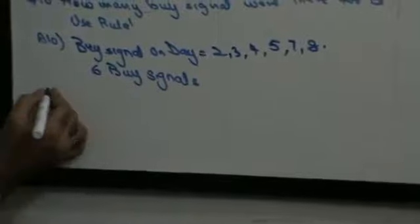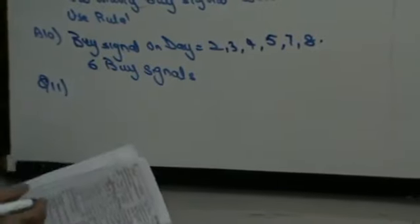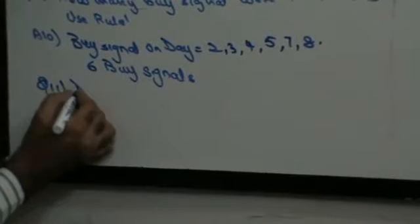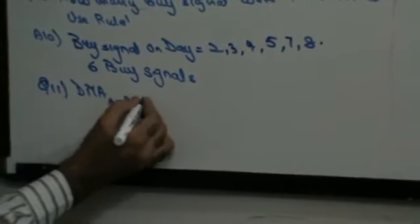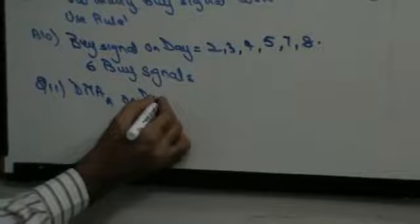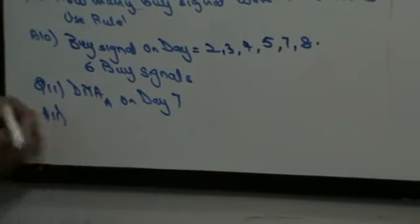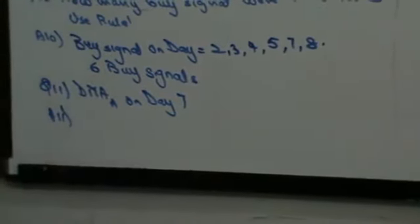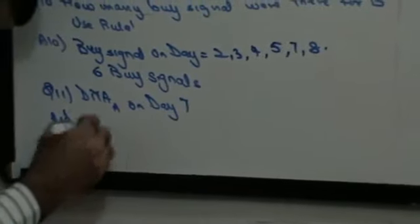Question 11: DMA of A on day 7. This was already calculated. DMA of A on day 7 is 65.